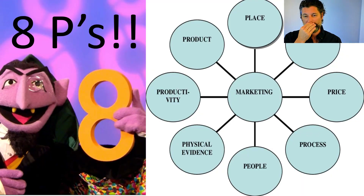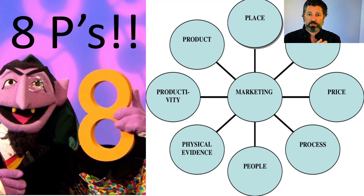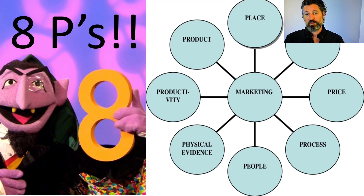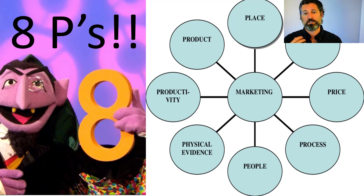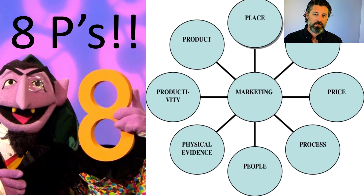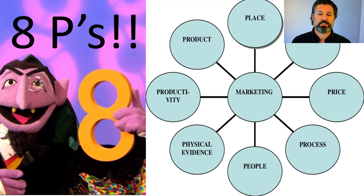The service blueprint brings all of this together and lays out all the pieces required to deliver a particular customer experience, which brings us to our final P: process. Looking at the full picture — we have the traditional four P's of product, price, place, and promotion. Then for services we add physical evidence for intangibility, people for inseparability, productivity for perishability, and finally process — designing repeatable and scalable systems. Services is sometimes discussed as a more advanced form of marketing because of these additional complexities requiring more than just the standard four P's.